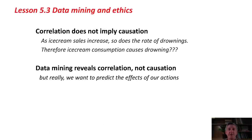Another ethical issue concerning data mining is that correlation does not imply causation. Here's a classic example: as ice cream sales increase, so does the rate of drownings. Therefore, ice cream consumption causes drowning? Probably not — they're probably both caused by warmer temperatures and people going to beaches. What data mining reveals is simply correlations, not causation. We want causation — we want to be able to predict the effects of our actions — but all we can look at using data mining techniques is correlation. To understand causation, you need a deeper model of what's going on.